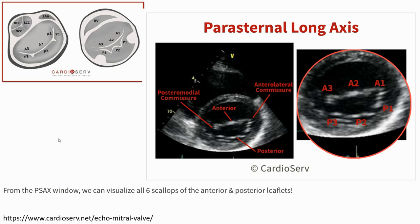Parasternal long axis again — no, it is a mistake. So here is what we call the parasternal short axis. In this view we can visualize all six scallops of the anterior and posterior leaflets. On this view we can see all of A1, A2, A3, P1, P2, and P3 using the parasternal short axis.